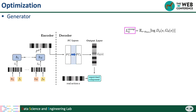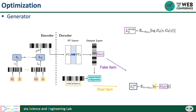For the generator, we also have supervised and unsupervised parts. The unsupervised loss is similar to a classic GAN model — it minimizes the probability that a generated item is classified as fake. The supervised loss aims to minimize the distance between the real item from data and the generated item from the generator, which helps generate items that are close to the real ones. The overall loss function of the generator is the weighted sum of the supervised and unsupervised parts. To optimize the whole framework, we alternately update the discriminator and the generator.